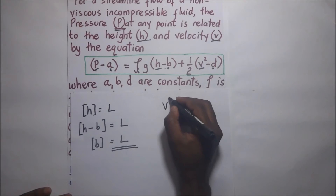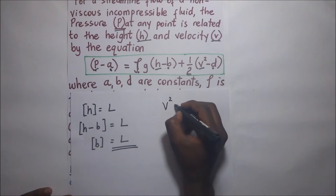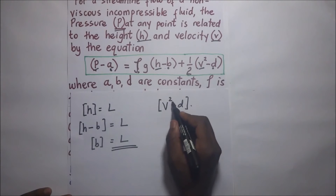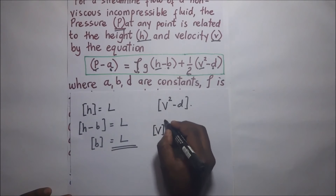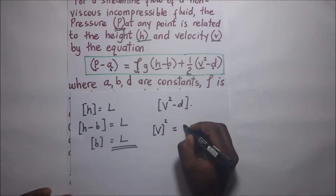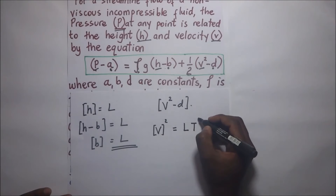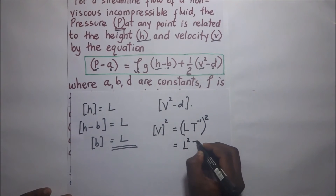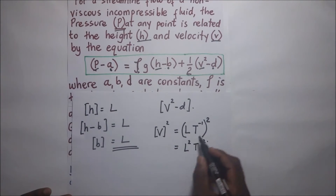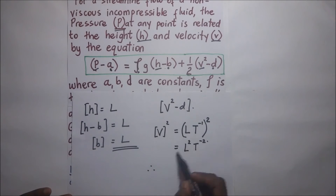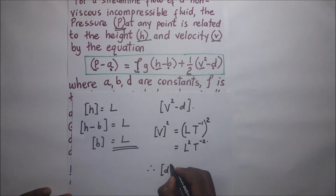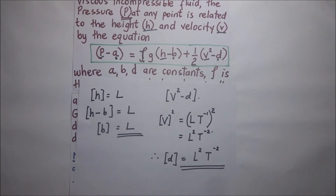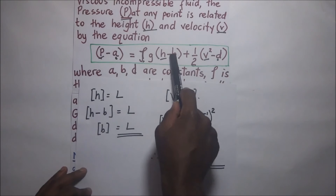To find the dimensions of D, we look at V squared minus D. The dimensions of V squared — velocity has dimensions LT to the power negative 1, so squared that becomes L squared T to the power negative 2. Since D is subtracted from V squared, the dimensions of D are also L squared T to the power negative 2. That is the answer for D.